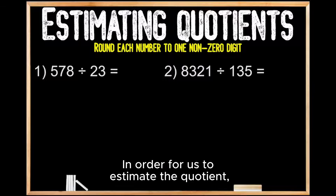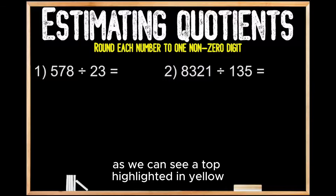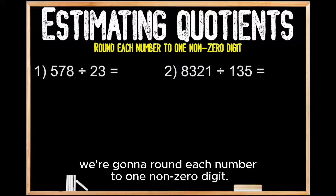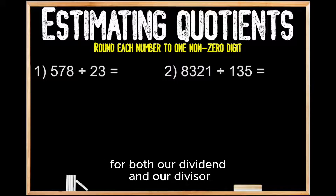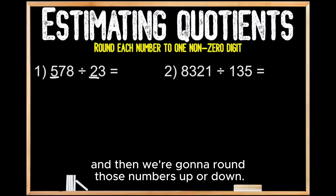In order for us to estimate the quotient or the answer here, as we can see up top highlighted in yellow, we're going to round each number to one non-zero digit. To do this, we're going to locate the far left digit for both our dividend and our divisor, and then we're going to round those numbers up or down.